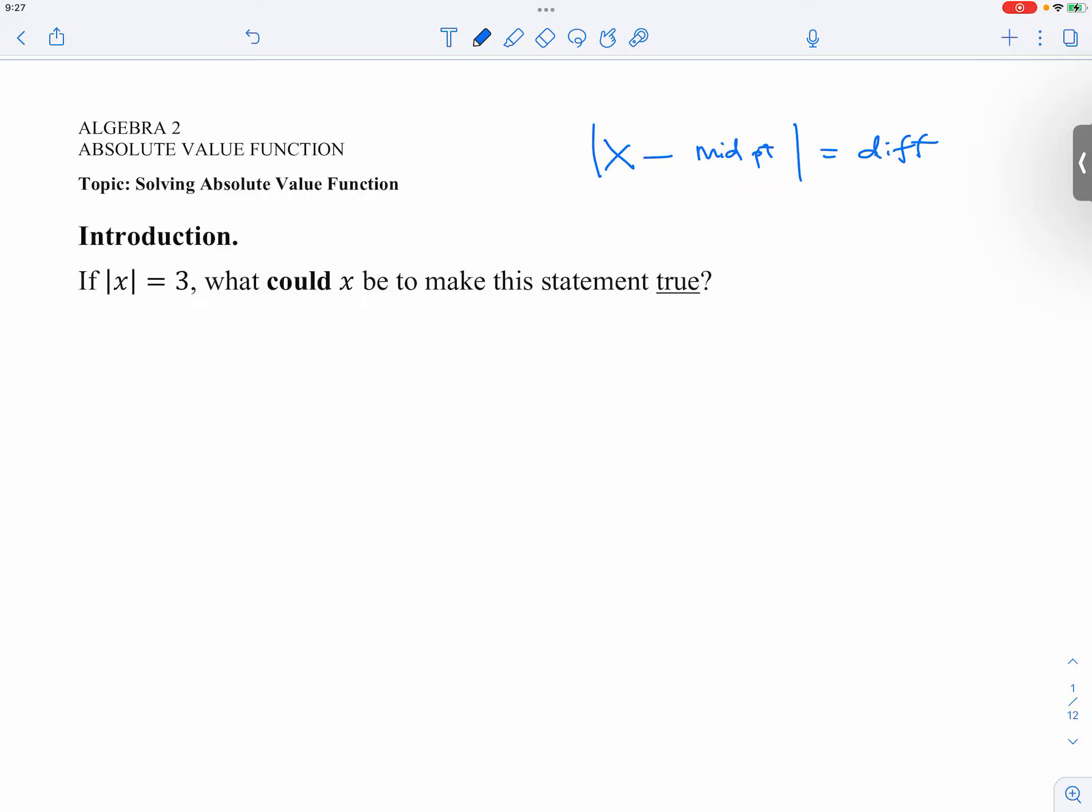If absolute value of x is equal to 3, what could x be to make this statement true? Any suggestion?